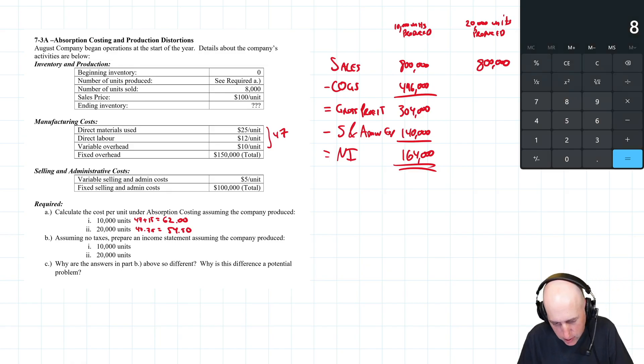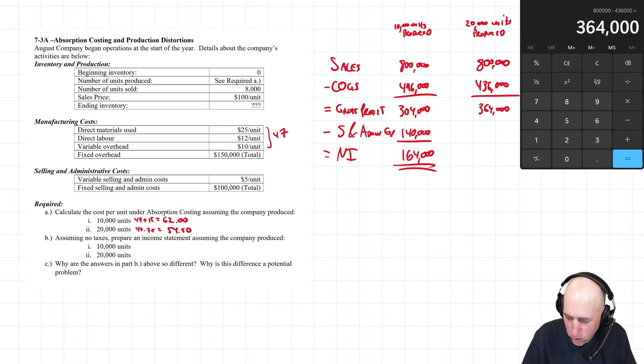So let's do the math. I sold 8,000 units, and if I make 20,000 units, my cost is $54.50. So 8,000 units times $54.50 is $436,000. So $800,000 minus $436,000 gives me a gross profit of $364,000. Our selling and admin just stayed the same: $5 a unit times 8,000 units is $40,000, and $100,000 of fixed selling and admin, so it's $140,000. $364,000 minus $140,000 is $224,000.